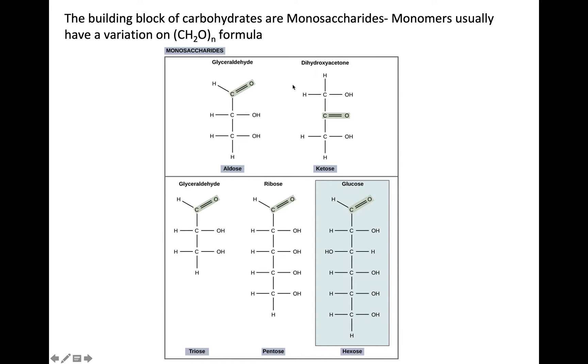So these are three carbon monosaccharides. We also have five carbon ones and six carbon ones and probably one of the carbohydrates that you're going to run into a lot in this course is glucose and also ribose.